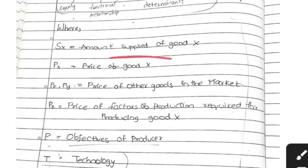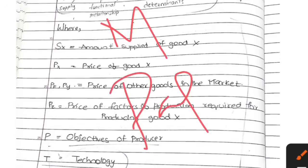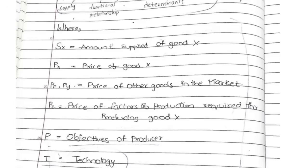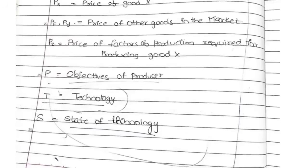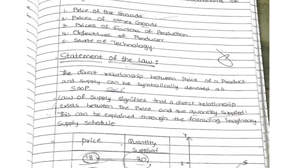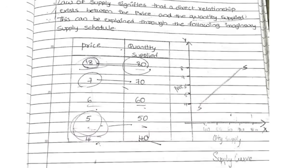Pf and Py are the prices of other goods. For example, if you are buying biscuits like Marigold, what is the price of the other biscuits in the market like Parle-G? That is the price of another commodity — that is called Pf or Py. Pz is the factors of production. O is objectives of the producer, T is technology, and S is state of technology. These are the determinants of the supply of a product.